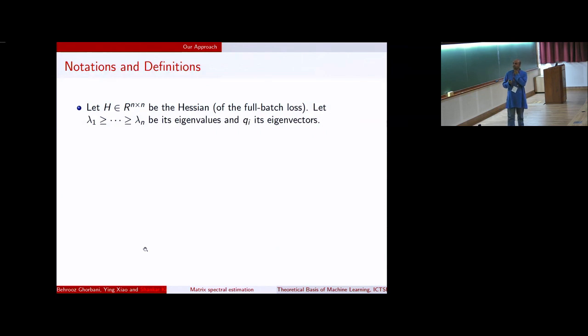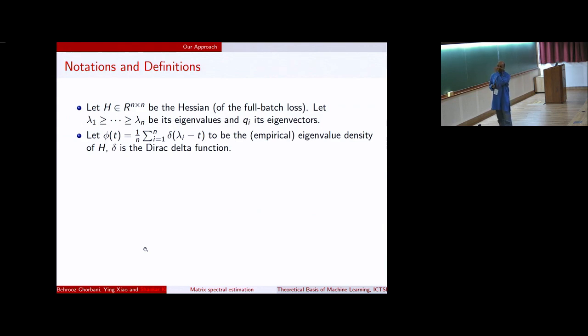Some definitions. Let H be your Hessian. And lambda 1 to lambda n are your eigenvalues. And Qs are your eigenvectors. So how do you estimate your spectrum? A simple way to write this is using the expression above. You can write it as a sum of Dirac delta functions. And this is the empirical eigenvalue density.